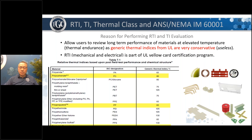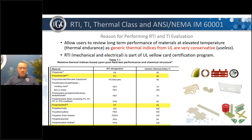You can obtain RTI two ways. If you don't want to spend the money, then UL will give you a generic RTI based on the chemistry of the material. The generic RTI that UL gives out is very conservative — sometimes even useless. If you look at the example below, polypropylene has a generic RTI of 65 degrees C.